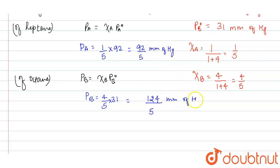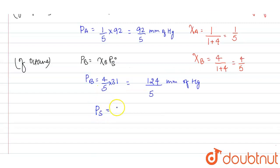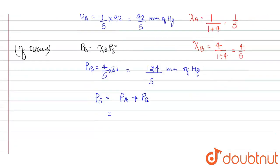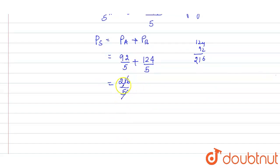And here all mm of Hg. Now we need to find out the total vapor pressure of solution. So let's consider vapor pressure of solution as PS. So PS will be equals to PA plus PB, right? So what is PA? PA we have calculated here is 92 by 5, and PB is 124 by 5. So by solving this, 92 plus 124 is 216 by 5, which will be equal to almost 43.2 mm of Hg. This is your total vapor pressure of the solution.